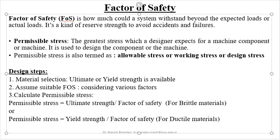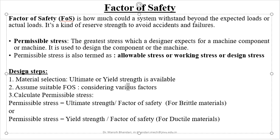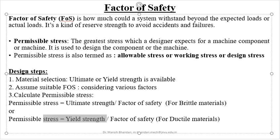Next we come to design steps. The first general step is material selection. Once we select the material for the specified application, we can find out the ultimate strength or real strength of the material from data handbooks or from testing laboratories. The next step is to assume a suitable factor of safety, considering various factors and criteria. The third step is to calculate the permissible stress, which is the ratio of ultimate strength to the factor of safety, or the ratio of yield strength to the factor of safety, depending upon the type of material.